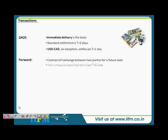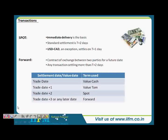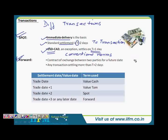A forward transaction is a contract of exchange between two parties for a future date. Any transaction settling more than T+2 days out is a forward transaction. The key difference: spot is T+2, and forward is anything beyond T+2 — T+3 or any later date.